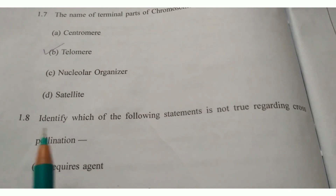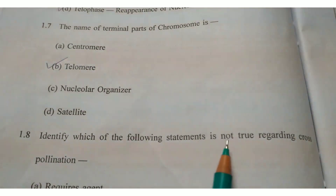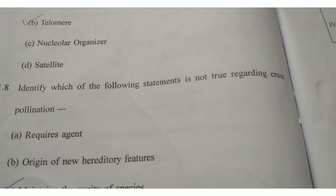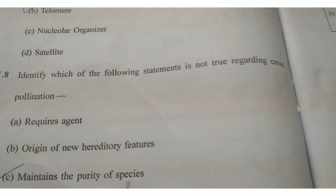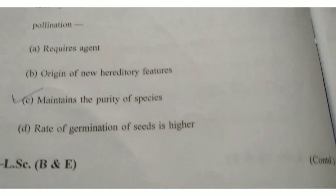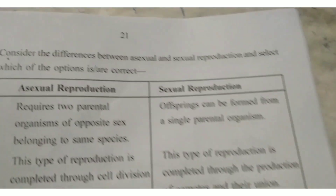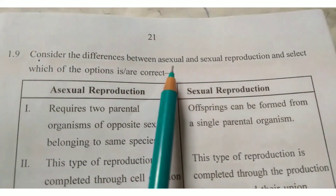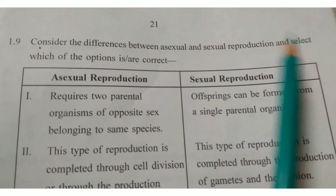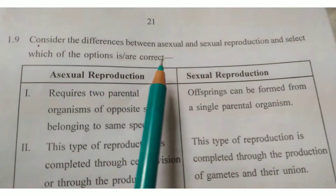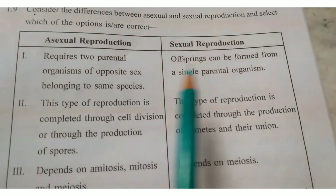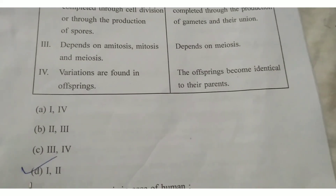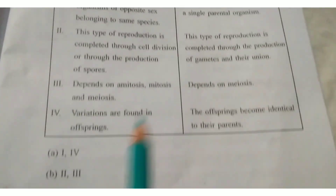Question 1.8: Identify which of the following statements is not true regarding cross-pollination. Write answer option C — Maintains the purity of species. Question 1.9: Consider the differences between sexual and asexual reproduction and select which of the options is correct. Write answer option D — 1 and 2.